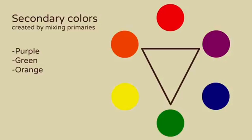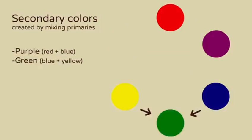The secondary colors—purple, green, and orange—are created by mixing primary colors. Red and blue makes purple, blue and yellow makes green, and yellow and red makes orange.